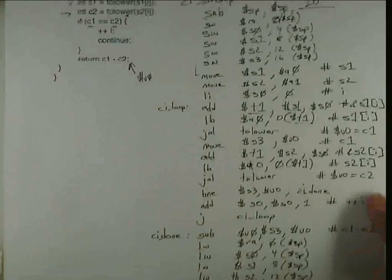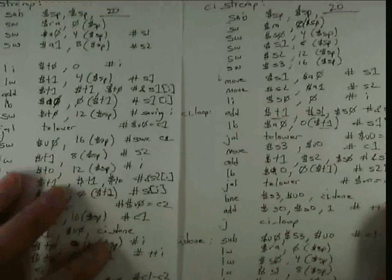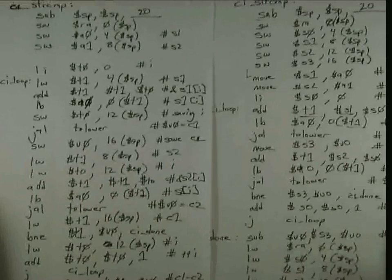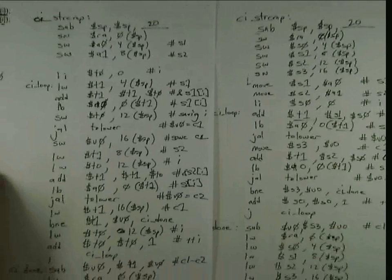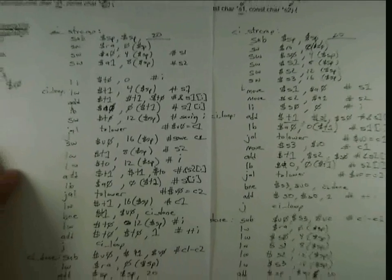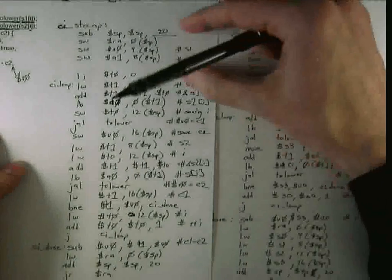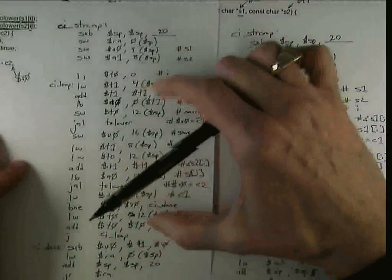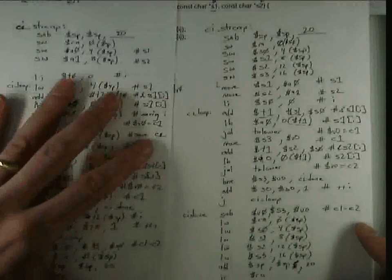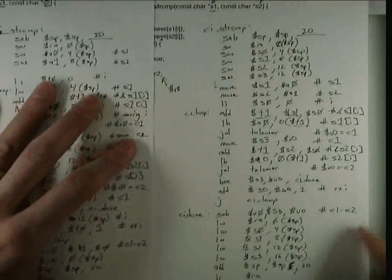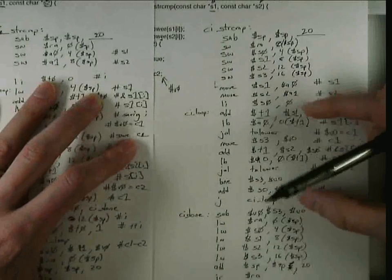So if we compare this code to the caller saved version, what we can see is that, especially if I zoom out a little, we can see in the caller saved version, there was a very short prologue and a very short epilogue, but there was a large body of the loop. What we've done in the callee saved version is we have a larger prologue and epilogue, but a much smaller loop.